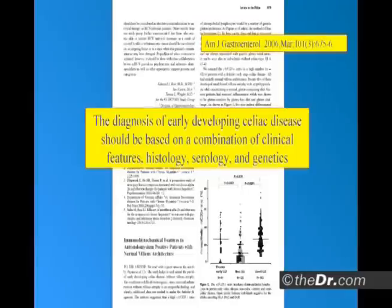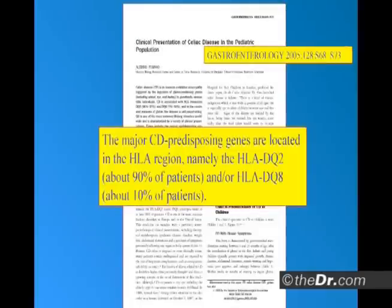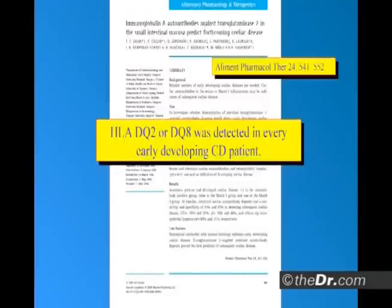The diagnosis of early developing celiac disease should be based on a combination of clinical features, histology, serology, and genetics. The major celiac predisposing genes are located in the HLA region — the human leukocyte antigen region — specifically HLA-DQ2. 90% of patients or more have DQ2, and the other 10% or so have DQ8. Some have both. HLA-DQ2 or DQ8 was detected in every early developing celiac patient.